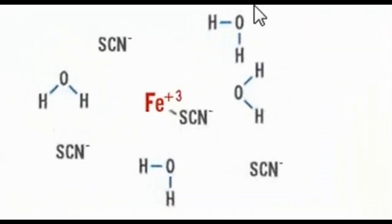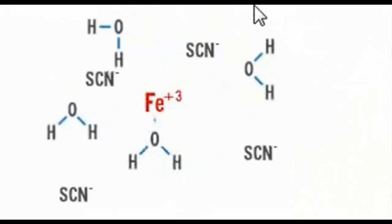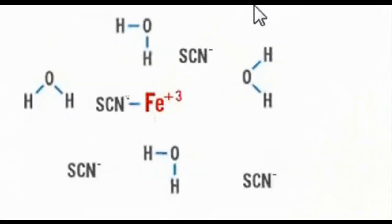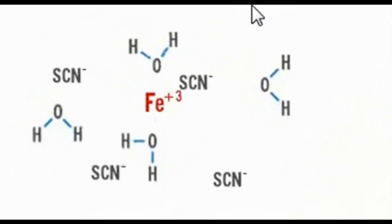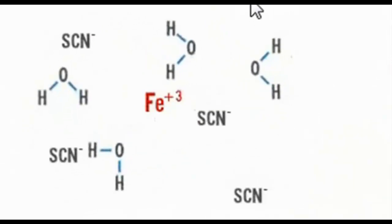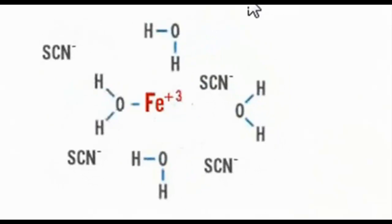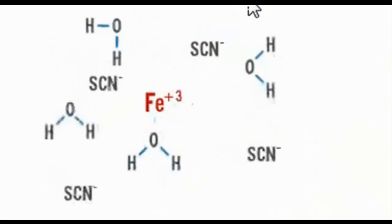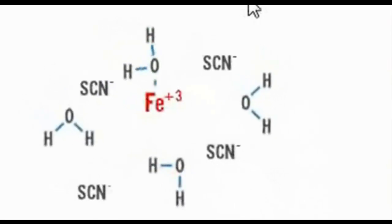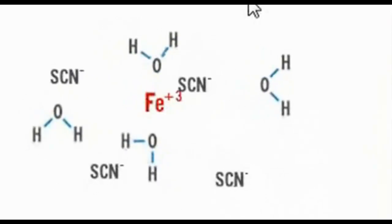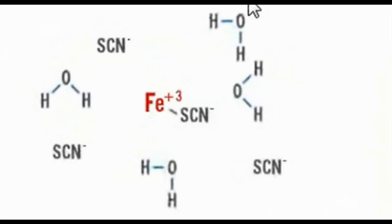When iron 3 ions contact thiocyanate ions in solution, they can react to form a complex ion, iron thiocyanate. As the reaction proceeds, product molecules can react in the reverse direction to separate and reform the original ions. Eventually, the concentrations of products and reactants become constant. At this point, the rates of the forward and reverse reactions are equal, and the system is in a state of dynamic equilibrium.